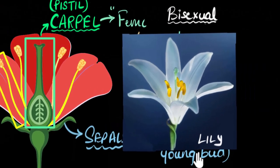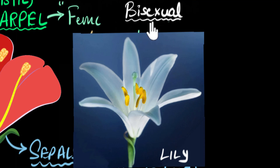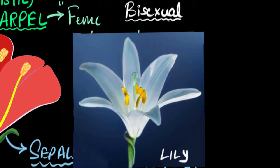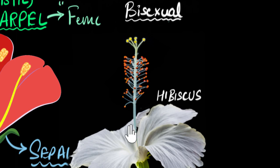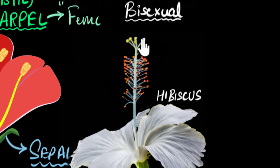For example, lilies are bisexual — you can see both the carpel, the female reproductive part, and the stamens, the male reproductive part. Another famous example is hibiscus. You can see the female reproductive part — the carpel, which here has five carpels fused together — and you can also see the stamens. Because both are present, hibiscus is a bisexual flower.